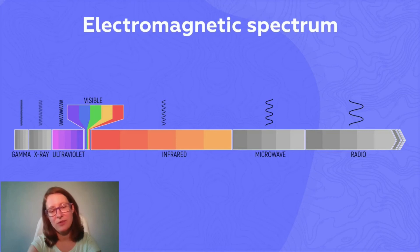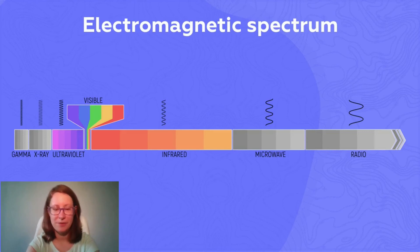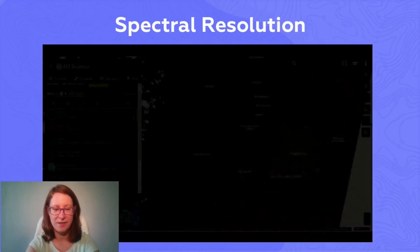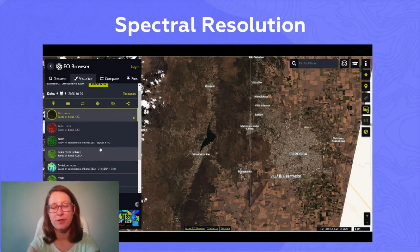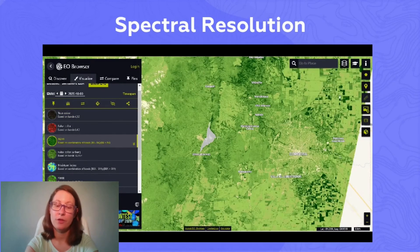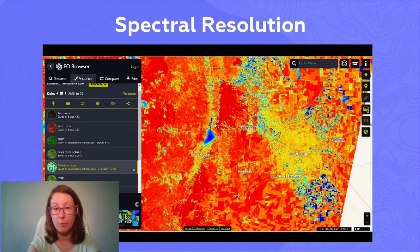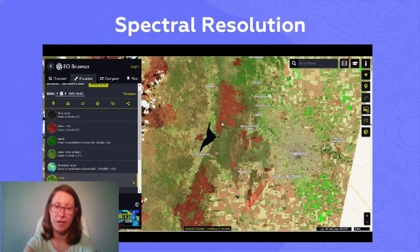This allows us to highlight different types of objects based on their spectral reflectance by combining different bands — for example, vegetation, water, or burnt areas. This is called spectral resolution.